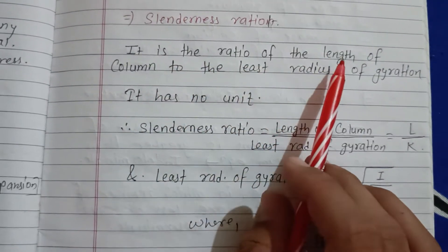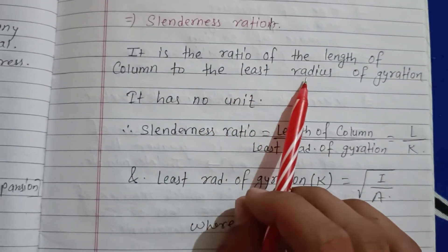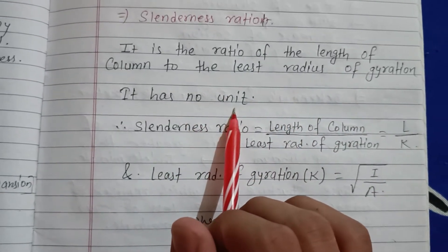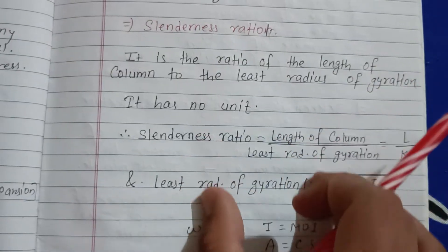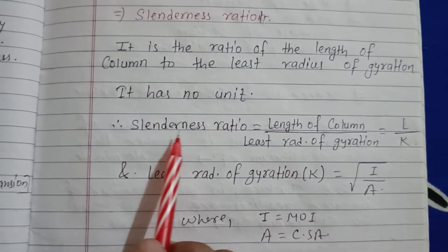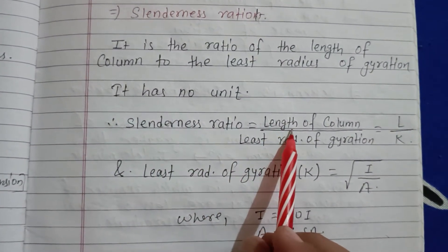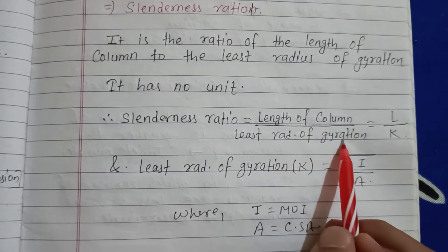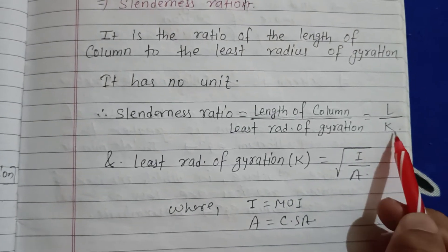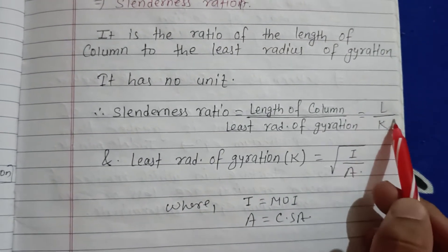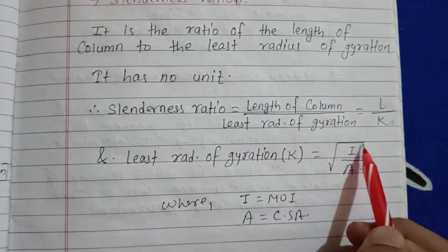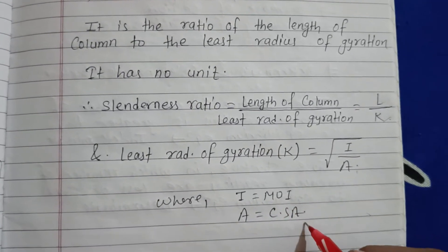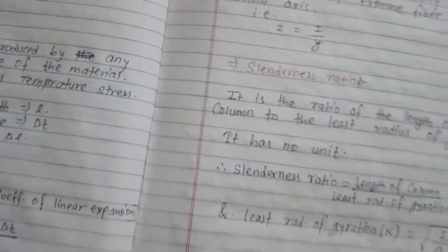Slenderness ratio is the ratio of the length of column to the least radius of gyration. It has no unit. It is length of column L upon the least radius of gyration k, where k equals the square root of I by A, and A is the cross-sectional area.